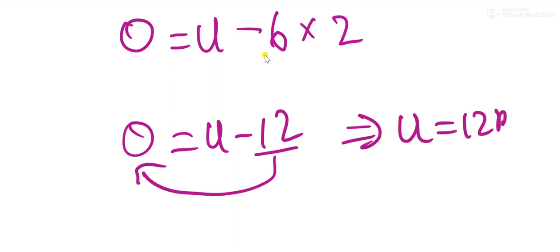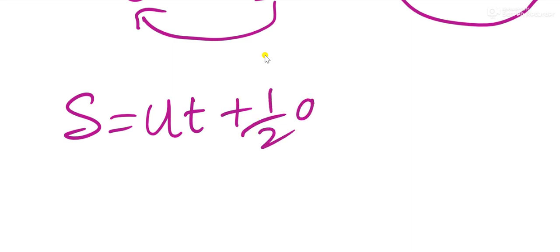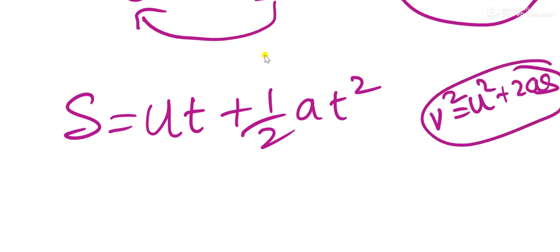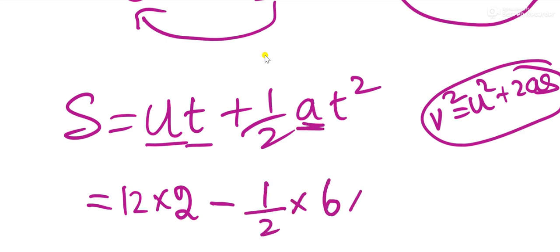Now displacement s equals ut plus half at squared. If you want, you can use this equation also: v squared equals u squared plus 2as. I will do this equation. So u is 12, time is 2, minus because acceleration will be minus 6 since it is retardation, time is 2, 2 squared.